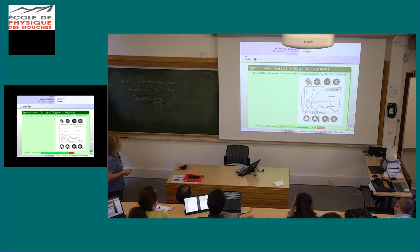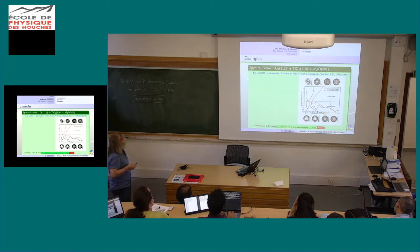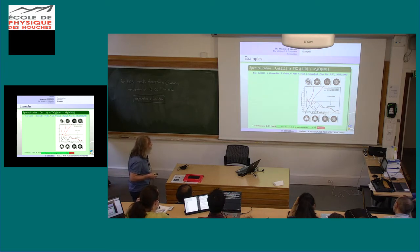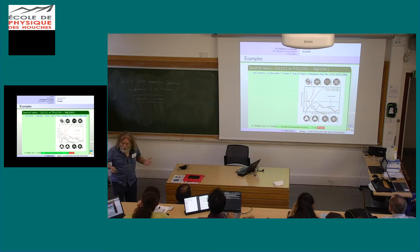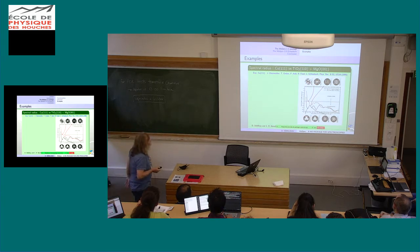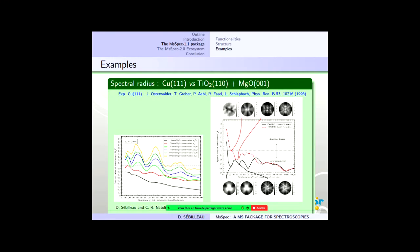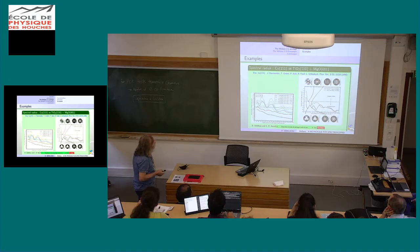I was extremely surprised that you could have agreement in single scattering. Later I visited Jörg Osterwalder in Zurich and he asked me to do photoelectron diffraction calculations on titanium dioxide — and I was back to knowing that single scattering was not working. But I reproduced the calculation in single scattering for copper and it was working perfectly well. And this is effectively the spectral radius that explains it — here is the spectral radius for titanium dioxide. At 25 eV it diverges, so you have no way to match the matrix inversion with single scattering.